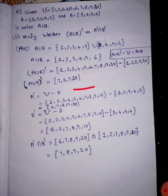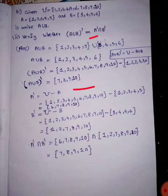So A dash is equal to B dash because we have to use intersection. A dash intersection B dash is equal to intersection. A dash equals universal set minus A. B dash equals universal set minus B. Solve it.